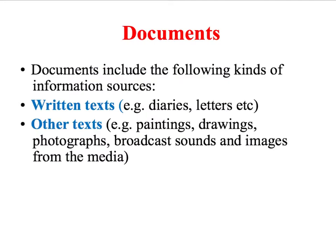Generally we use the term 'documents' to describe the different types of qualitative secondary data that might be of interest to sociologists. Documents include most obviously written texts, such as diaries and letters. But we can also use documents that take the form of other types of texts, so we might be looking at paintings, drawings, photographs, as well as the broadcast sounds and images associated with documents produced by the mass media. Remember, when we're talking about qualitative data we're talking about non-numerical data, and this can take many different forms.